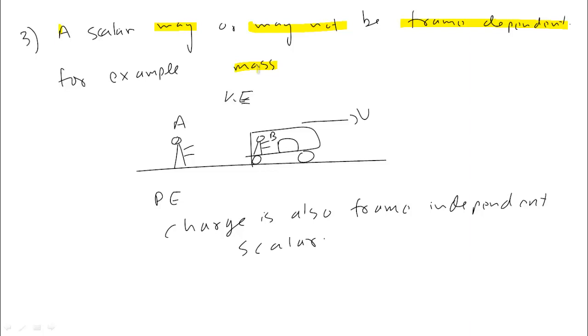Don't confuse between mass and weight. Weight is mass into gravity. Mass is quantity of matter and is independent of frame. Now let's talk about kinetic energy. We all know kinetic energy is half mv². How is kinetic energy frame dependent?